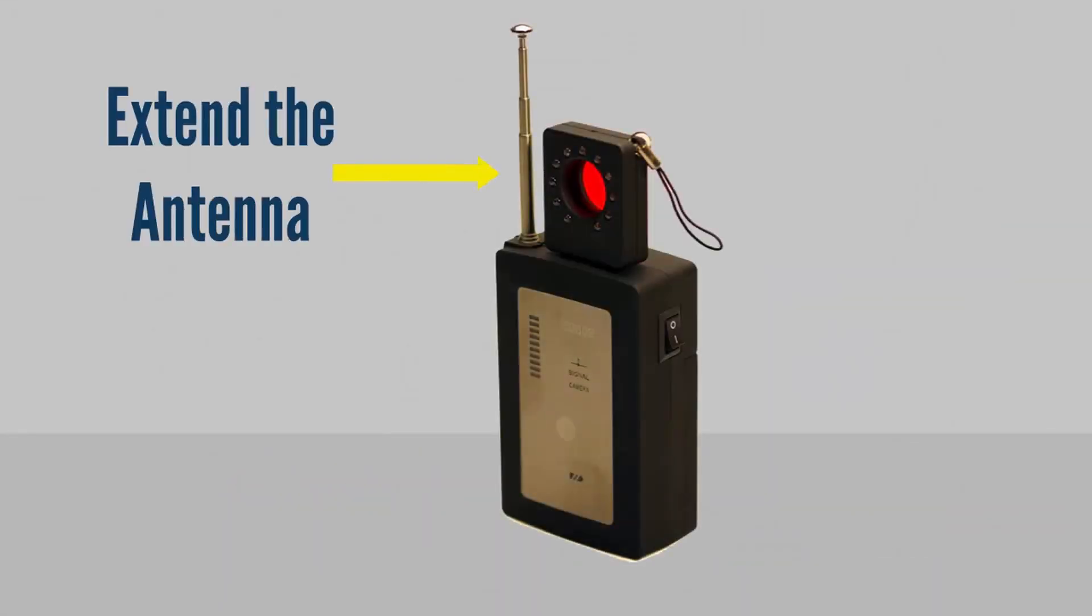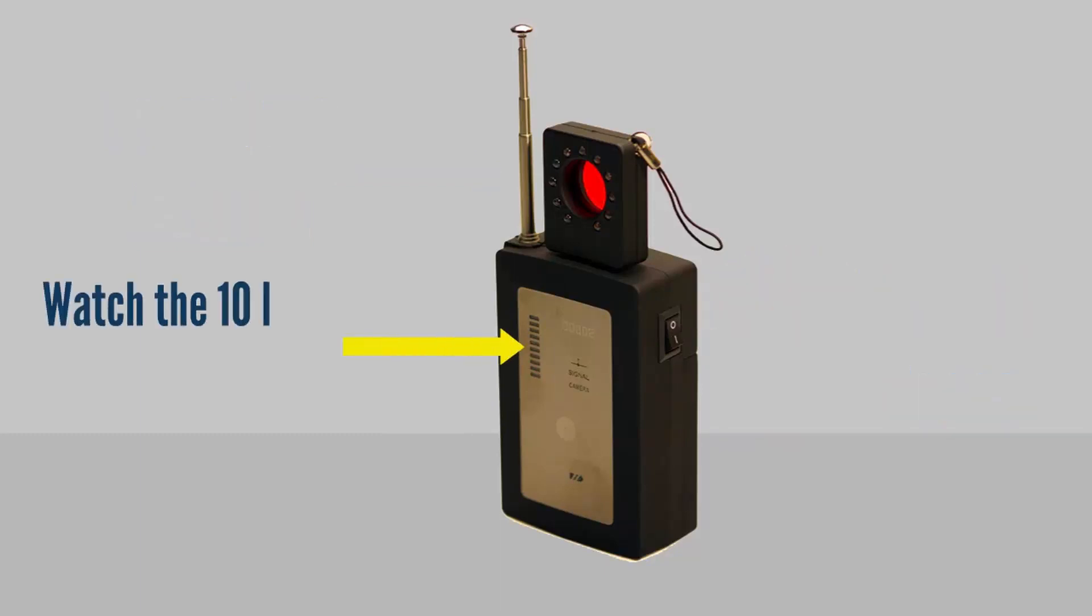To start searching for any transmitting devices, simply extend the antenna and turn on your MaxiTech bug sweep. Watch the 10-level LED display. If the device picks up a wireless signal, the LEDs will light up according to the strength of the signal.